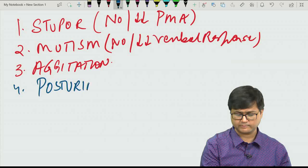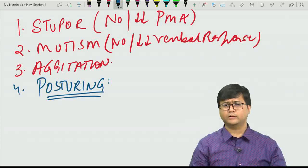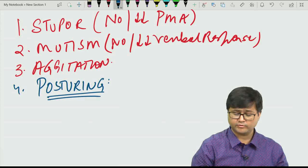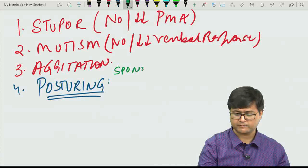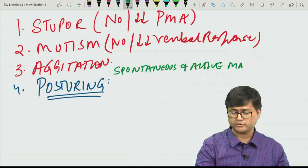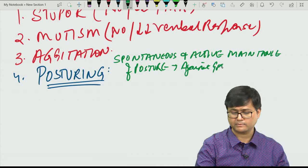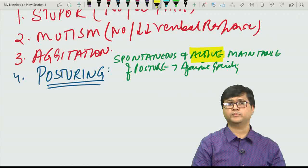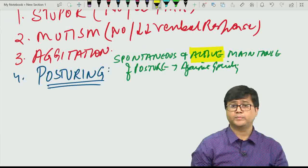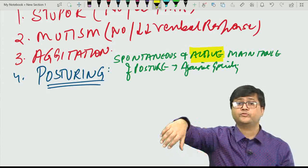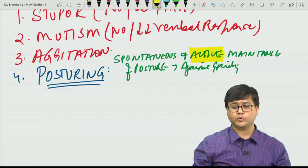The fourth clinical feature is posturing, as shown in the picture in the question. Posturing is the spontaneous and active maintenance of a posture held against gravity — the person himself actively maintains this posture for a long duration, from a few minutes to even hours.